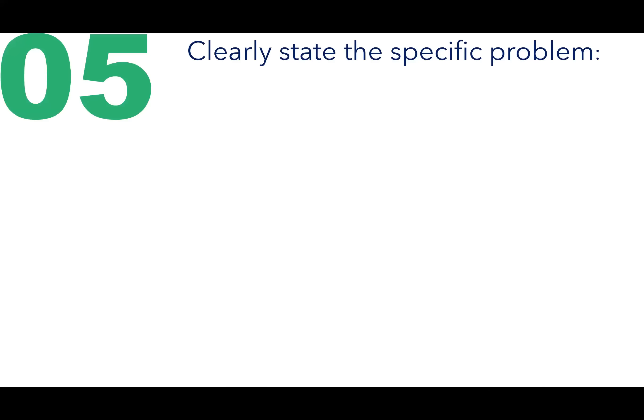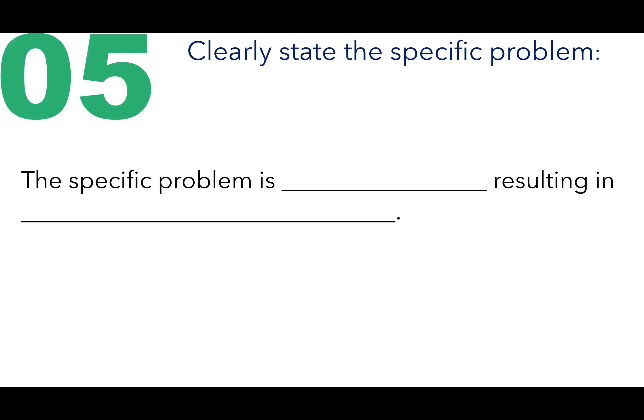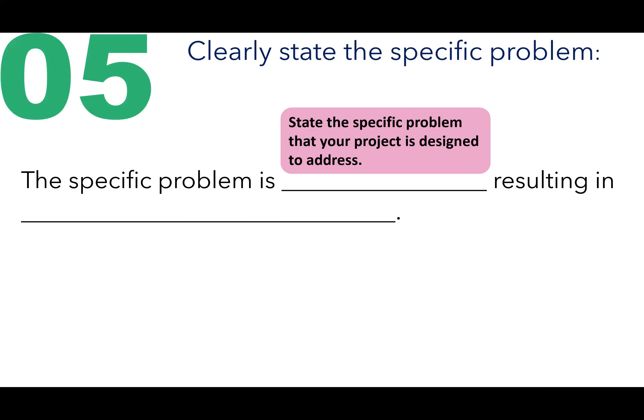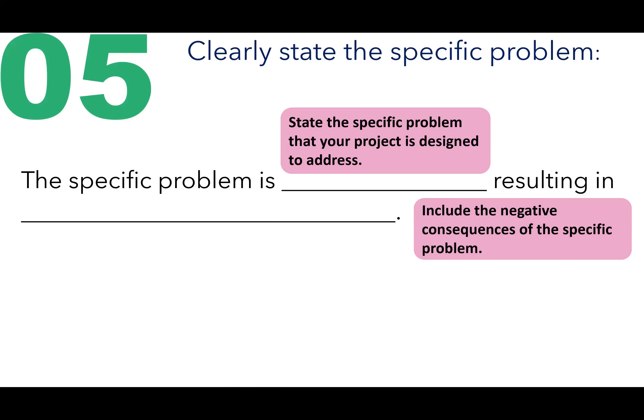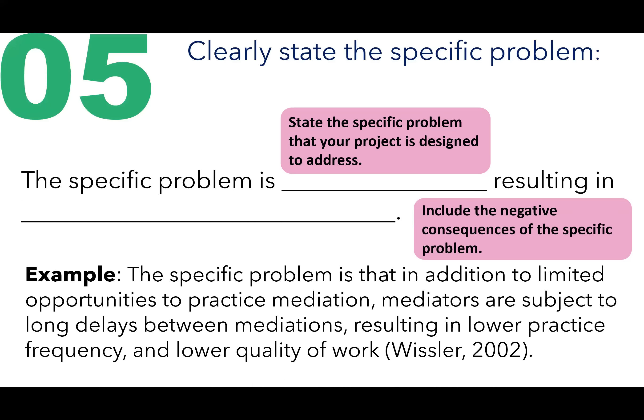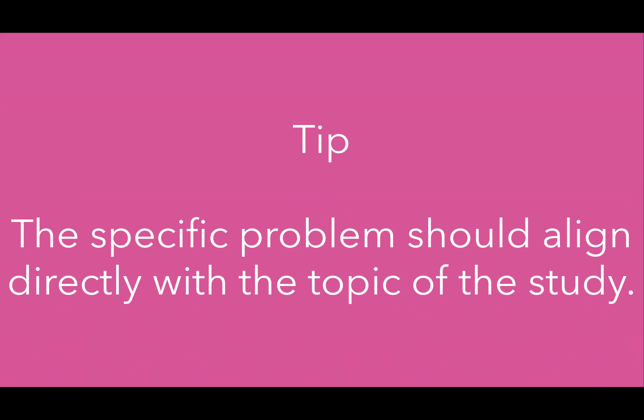Number five: clearly state the specific problem. You need to structure your sentence such that the specific problem is [state the specific problem your project is designed to address], resulting in [include the negative consequences of the specific problem]. For example: the specific problem is that, in addition to limited opportunities to practice mediation, mediators are subject to long delays between mediations, resulting in lower practice frequency and lower quality of work. The tip for this fifth step is the specific problem should align directly with the topic of the study.